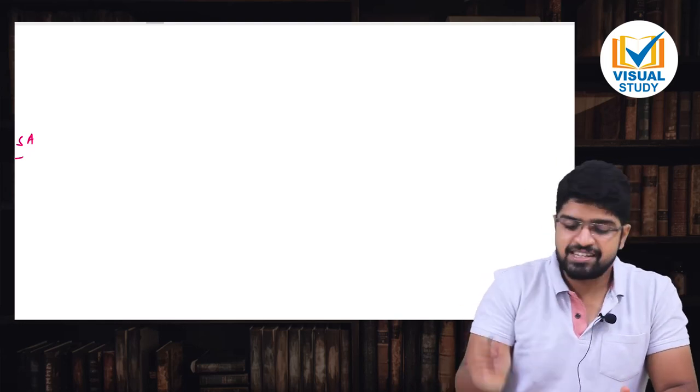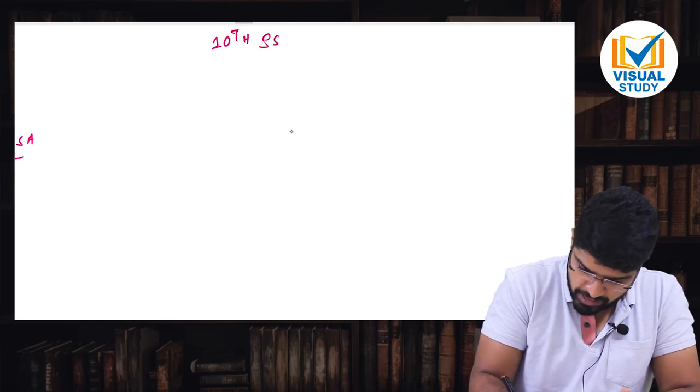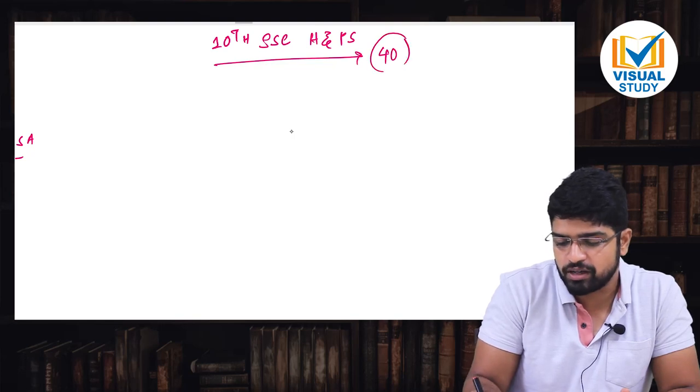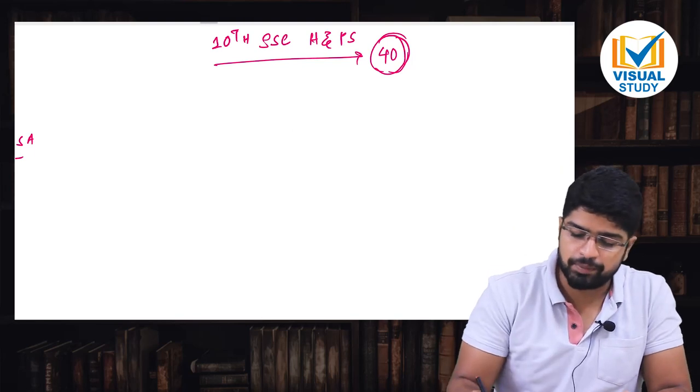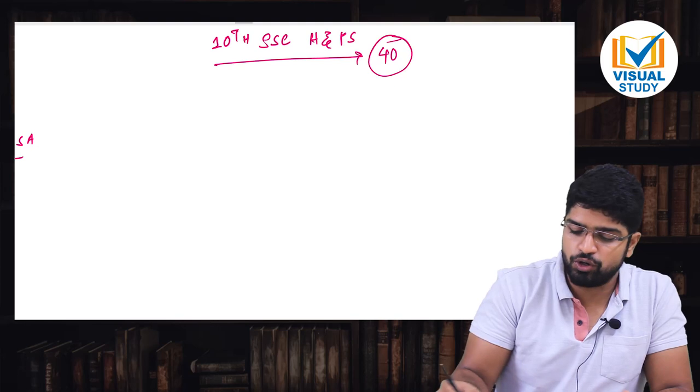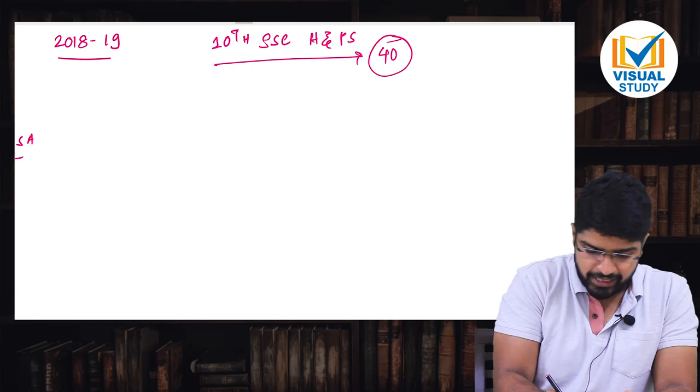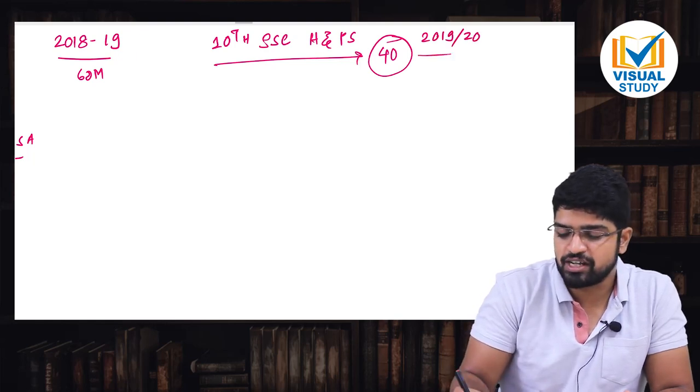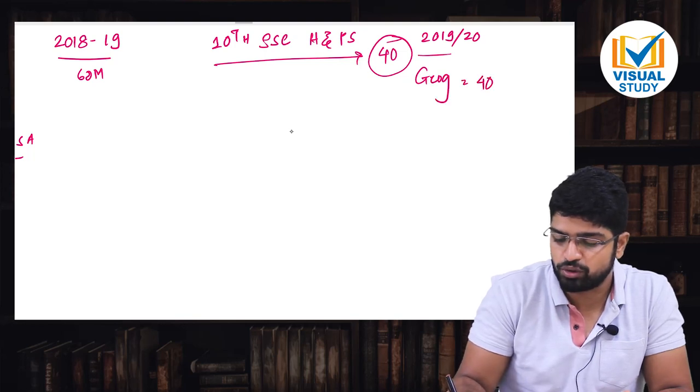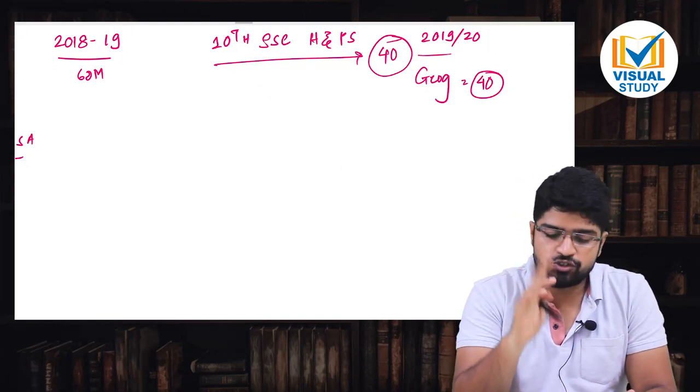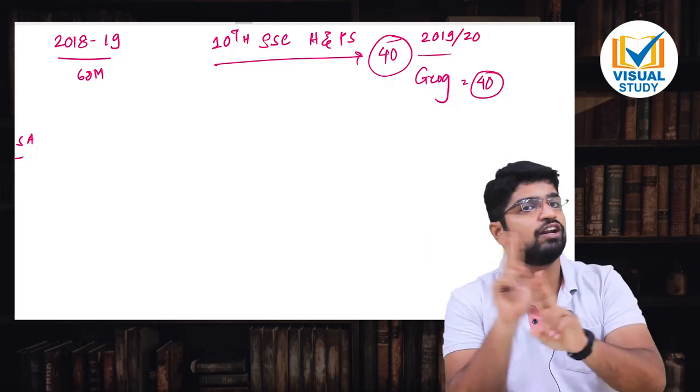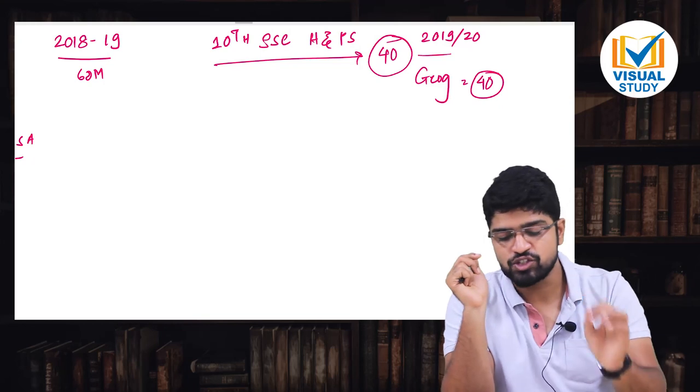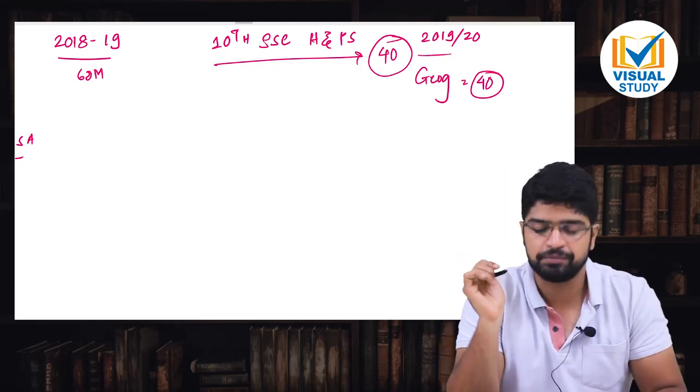Let's go further. First of all, we will do the pattern of history paper. The question paper pattern. Subse pehle your SSC pattern. Tenth SSC ka jo pattern hai. The pattern for tenth SSC history and political science is bifurcated into a complete total of 40 marks. In the previous exam, the examination of 2018-19, this was for a total of 60 marks. Like in 2019-20, this has been again revised to a total of 40 marks along with geography which has been called again for a total of 40 marks.